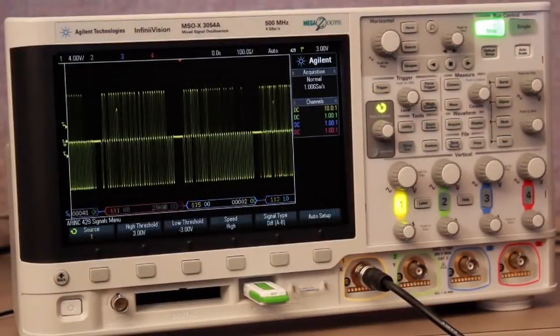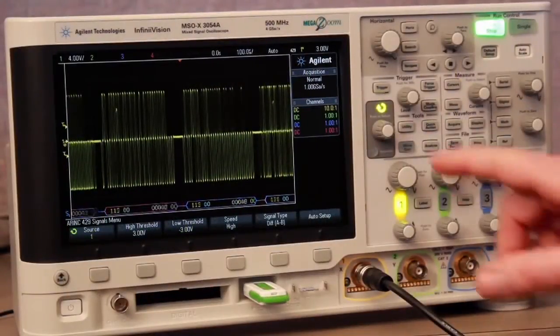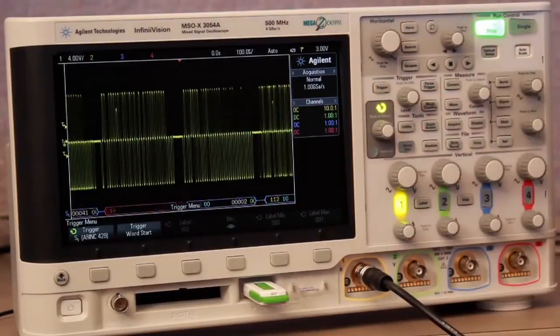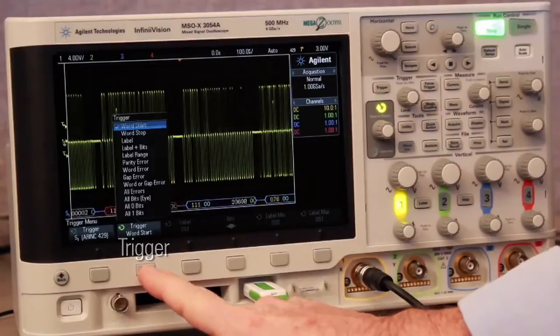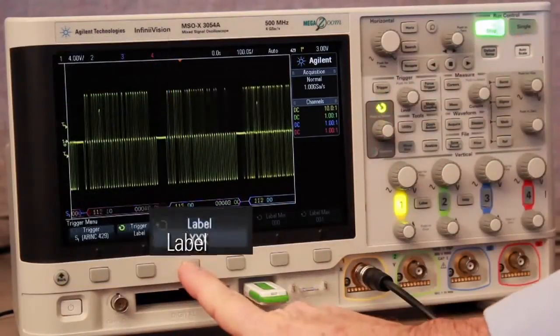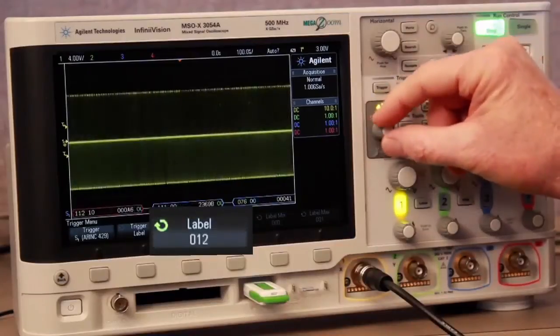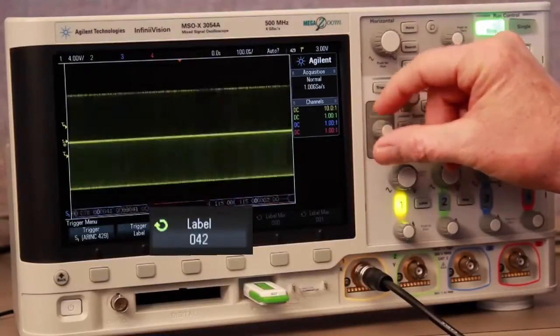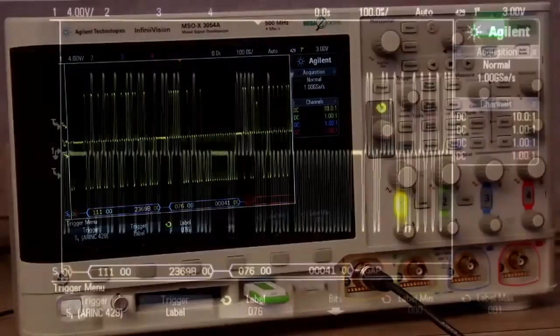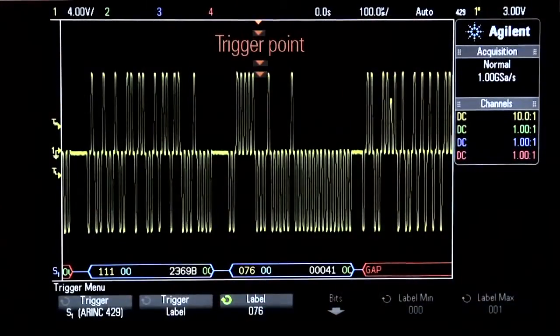To establish a more unique trigger condition, press the scope's front panel trigger key, and then change from triggering on word start to label. We can then dial in the specific label value that we want to trigger on. In this case, I'm setting up the scope to trigger on label value of 076 in octal. We have now established a stable trigger.